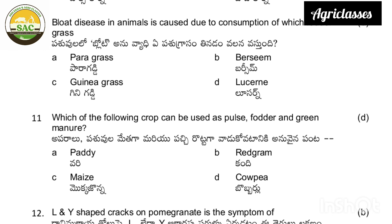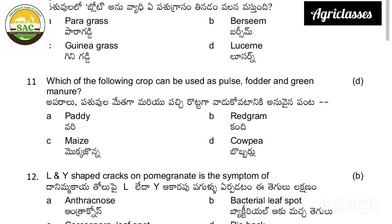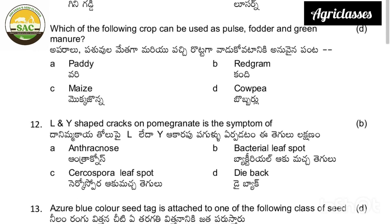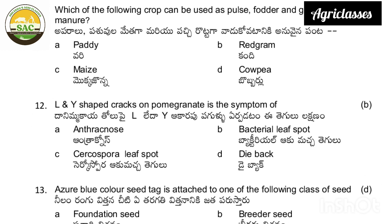Next question: L and Y-shaped cracks on pomegranate is the symptom of — anthracnose, bacterial leaf spot, cercospora, or dybacca. The correct answer is bacterial leaf spot, as already discussed in previous videos.